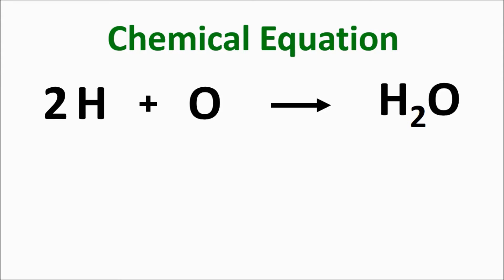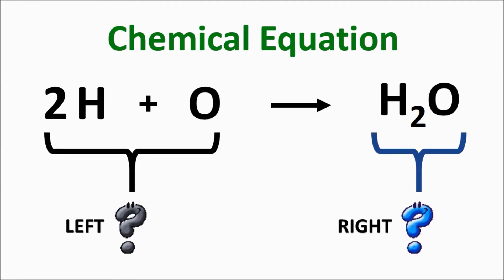Written in this way, we call it a chemical equation. The formula of the substances before the reaction are written on the left, and the formulas of the substances present after the reaction are written on the right. What do you think the names for each side of the equation are called?